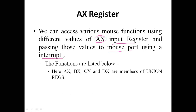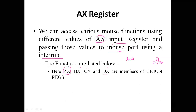These values are passed to the mouse port using an interrupt. We take help of the AX, BX, CX, and DX registers — members of the union REGS defined in dos.h. The AX register is the one major register that helps you identify what kind of functionality you are dealing with, based on the number provided to it.